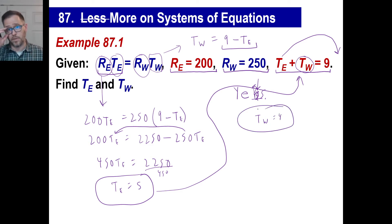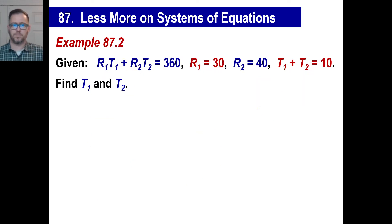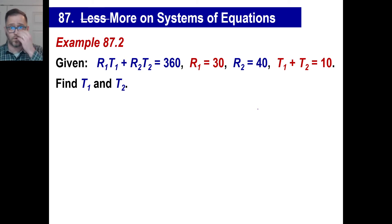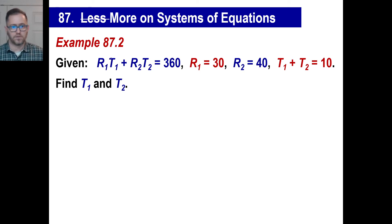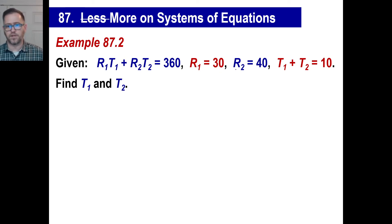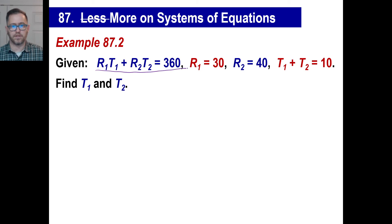Let's try another one — copy this down, pause if you need to. We have four equations again. The distance of the first car plus the distance of the second car was 360 miles — they might say the two cars together traveled 360 miles. The first car went 30 miles an hour, the second car went 40 miles an hour, and together the two cars drove for 10 hours. What was the time of the first car and the time of the second car? Here's the equation we're going to use — we rewrite it and plug in all the other information to make it solvable.